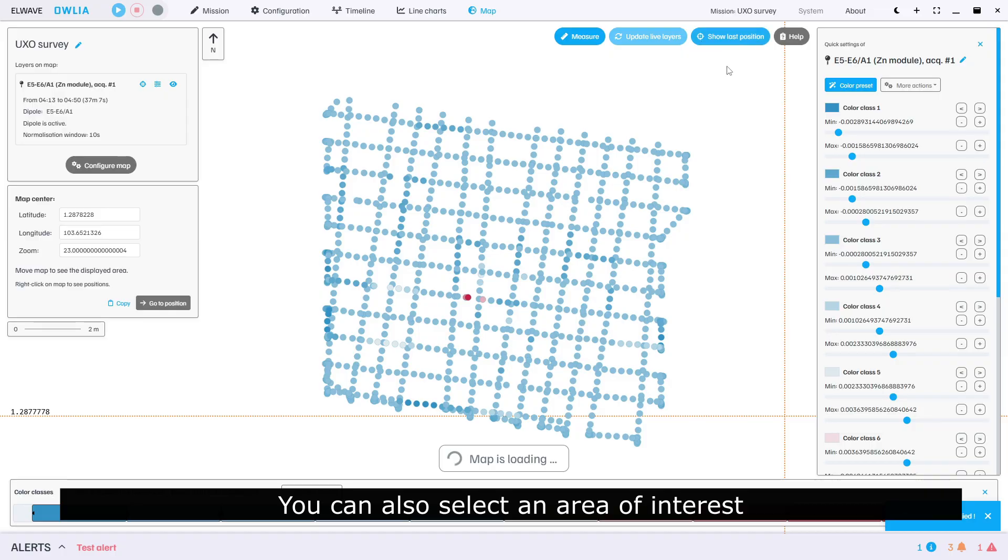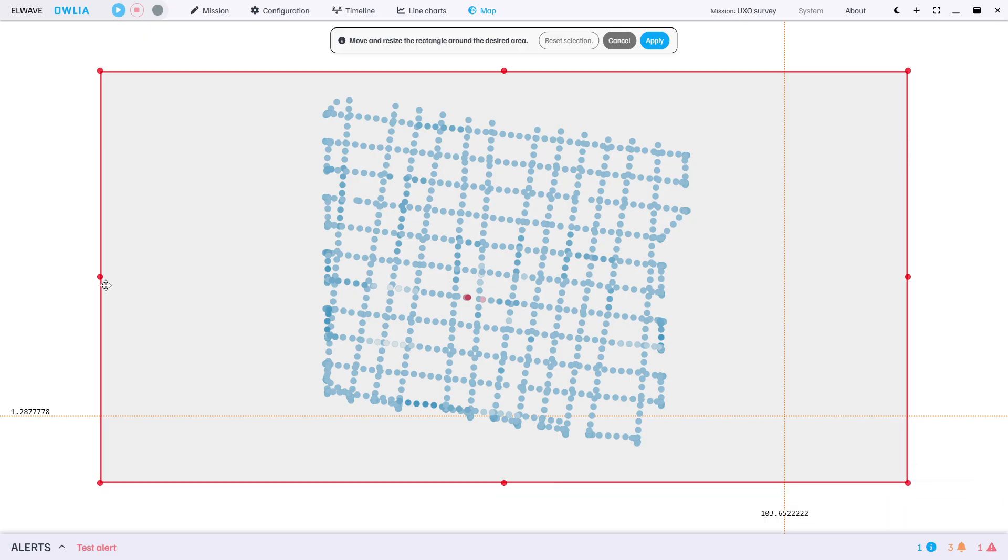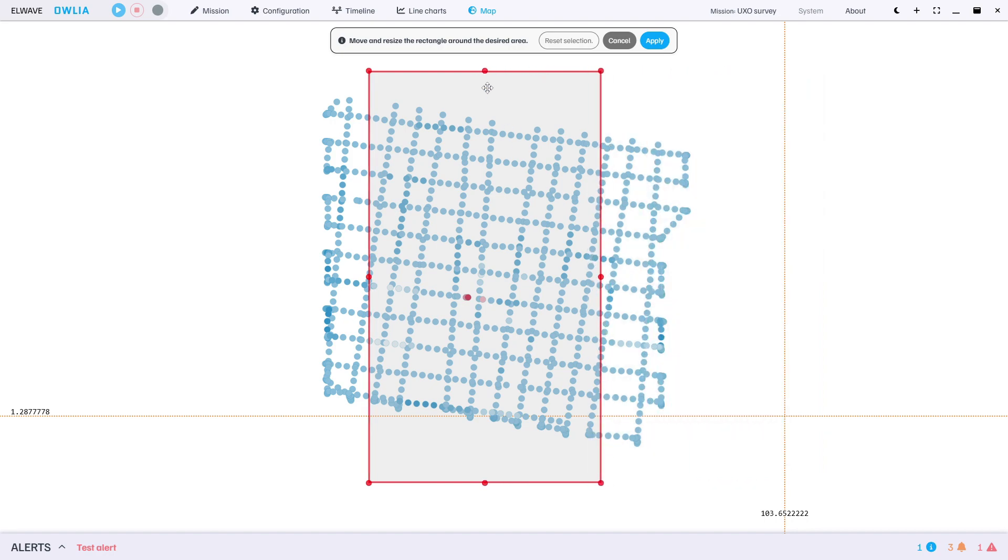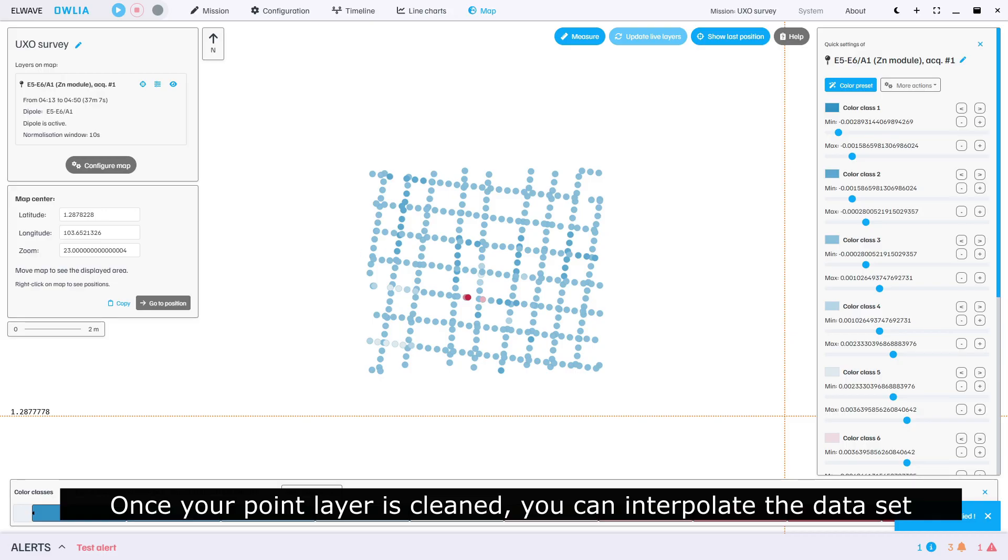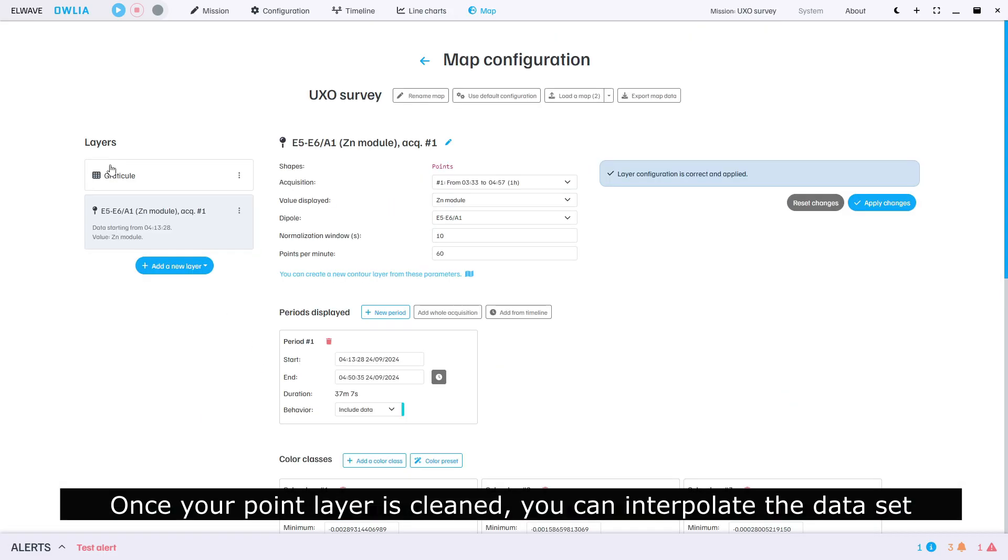You can also select an area of interest. Once your point layer is cleaned, you can interpolate the data set and generate a contour layer.